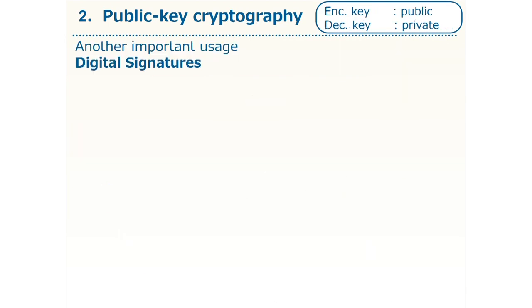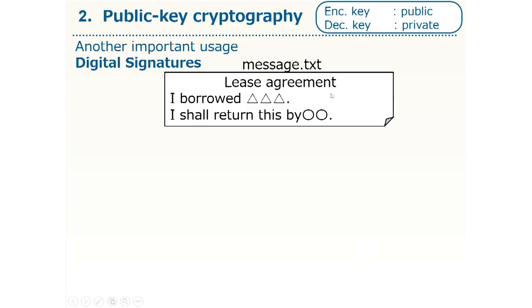There is another important application of the public key cryptography. That is what is known as digital signature. The feature of public key cryptography that is important here is that the encryption key is different from the decryption key. The encryption key can be shared with everyone, while the decryption key should be kept as your own secret. For example, suppose I have some important document, such as a release agreement stating, 'I borrowed this thing and I shall return this by a specified date.'